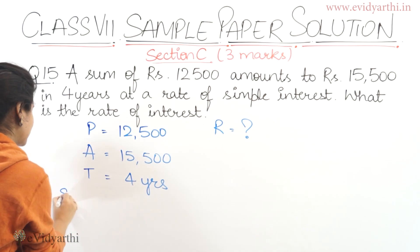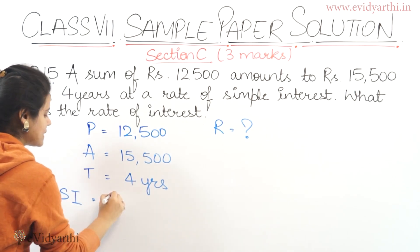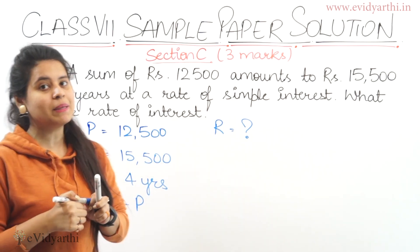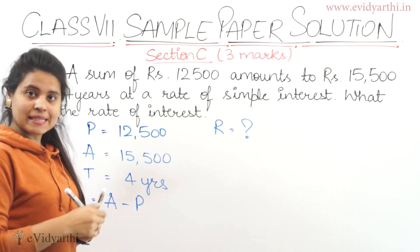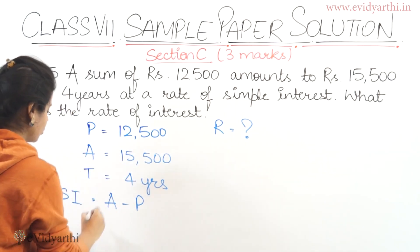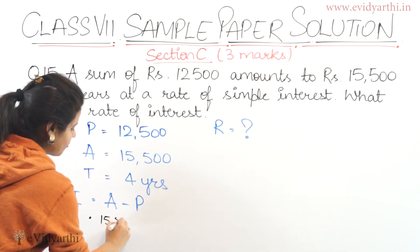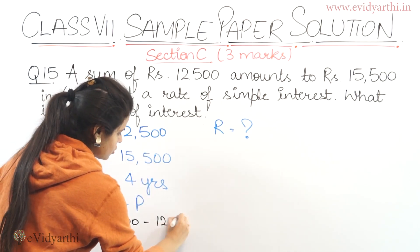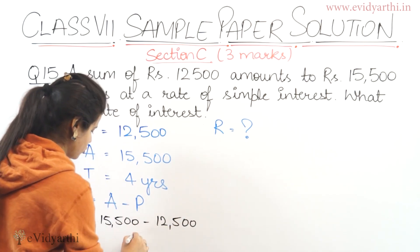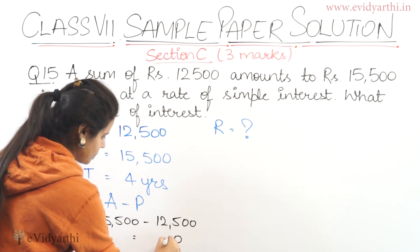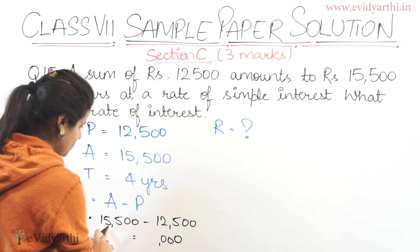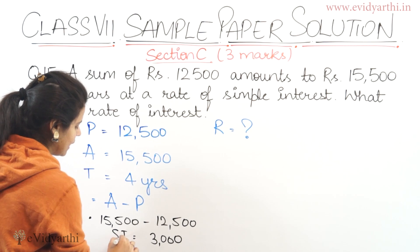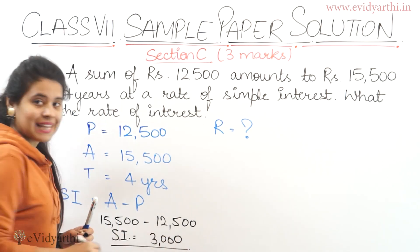I will find the simple interest first. Amount given minus principal gives simple interest. So: 15,500 minus 12,500 equals 3,000. Simple interest is 3,000.